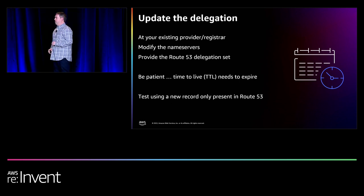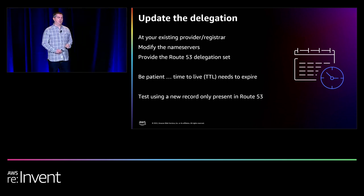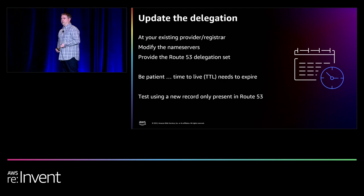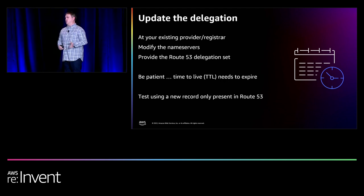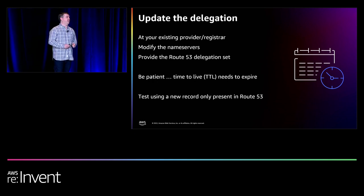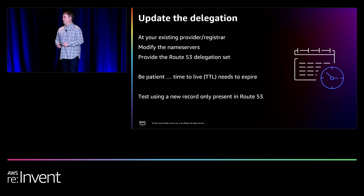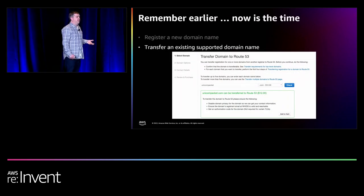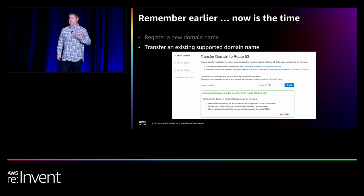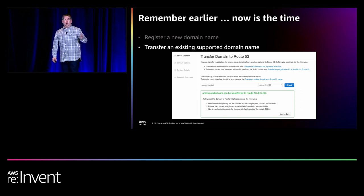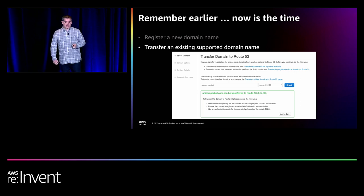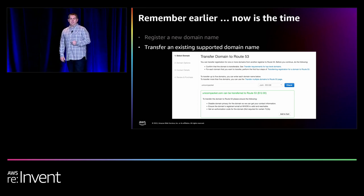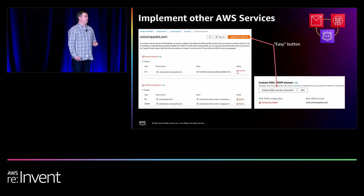On the left is the backup website hosted in the Ireland region EU-West-1, on an S3 bucket with static website hosting enabled — it provides a publicly available domain name. On the right is the application load balancer in the London region. The first step is to set up health checks. You give it a name, choose what to monitor — in this case an endpoint — provide the domain name, choose the protocol, paste in the publicly available domain name from the load balancer or S3 bucket, specify a port and path if there is one, and click next. You also have the option to be notified when a health check fails via Amazon SNS.